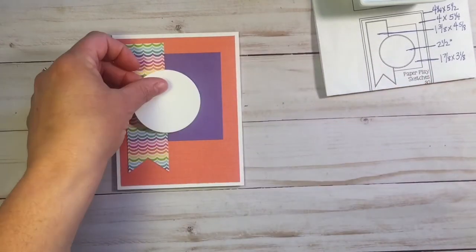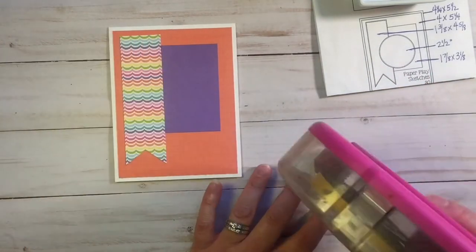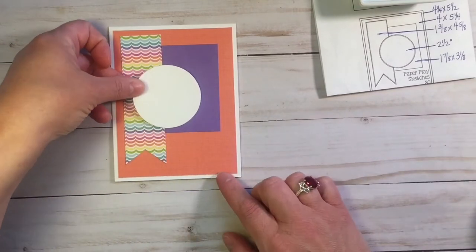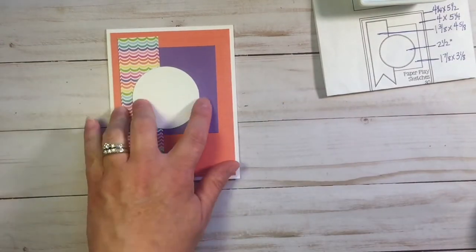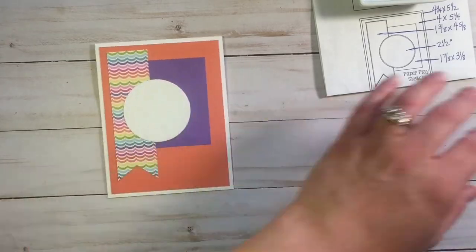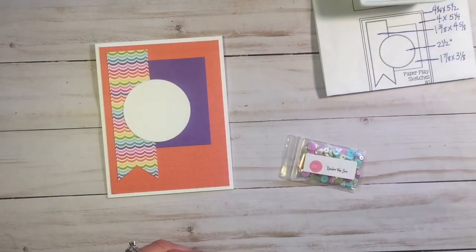And I'm showing how the rectangle needs to come down a little bit from the top corner of the banner, and how the circle is in the middle of those two, but towards the bottom, following the sketch.